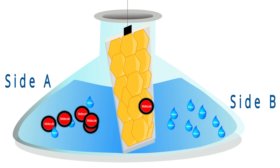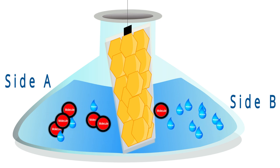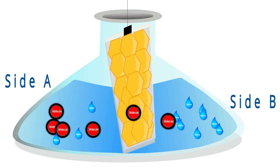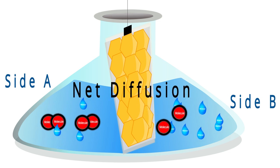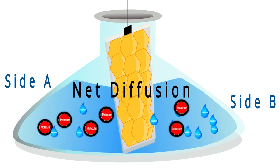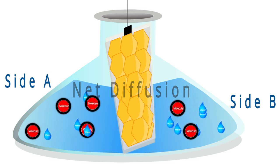Because there are more molecules moving on side A, there are also more collisions, so more particles move from A to B than from B to A. The amount of materials moving from side to side is called net diffusion. Net diffusion moves down the concentration gradient from areas of high concentration to areas of low concentration.